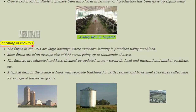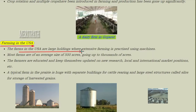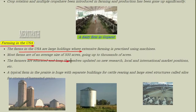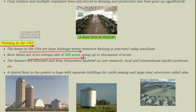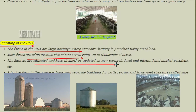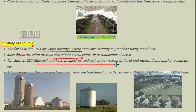Now let us discuss farming in the USA. The farms in USA are large holdings where extensive farming is practiced using machines. Most farms average 500 acres, going up to 1000 acres. These farmers are educated and keep themselves updated on new research and local market conditions. A typical farm in the prairie is huge, with separate buildings for cattle and large steel structures called silos for storage of harvested grains.